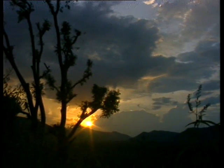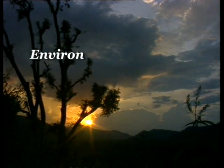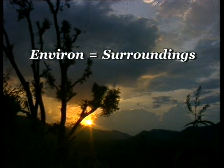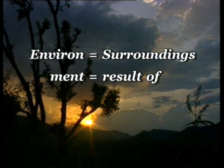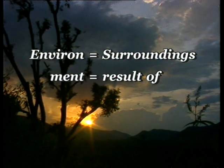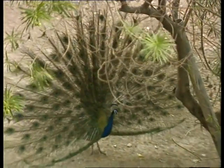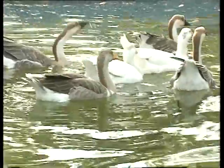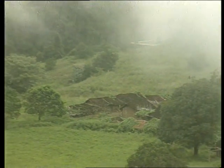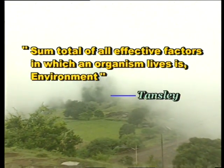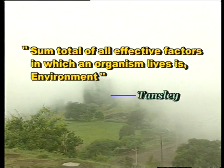The word environment has two parts: 'environ' meaning surroundings and 'ment' meaning the result of. It thus means everything that surrounds an organism. Hence, environment is the sum total of living and non-living components, influences and events surrounding an organism. According to Tansley, the sum total of all effective factors in which an organism lives is environment.